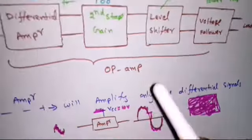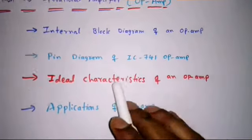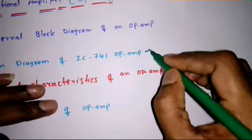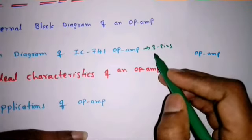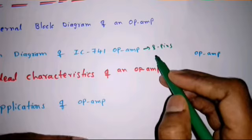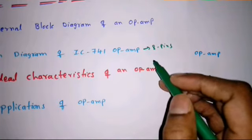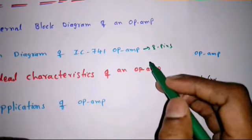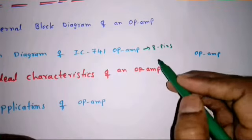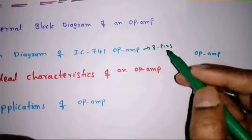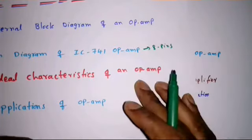We also saw the pin diagram of IC741, which has a total of eight pins. Pin 1 is offset null, pin 2 is the inverting input terminal, pin 3 is the non-inverting input terminal, pin 4 is minus VCC, pin 5 is again offset null, pin 6 is the output, pin 7 is plus VCC or positive supply, and pin 8 is not connected.